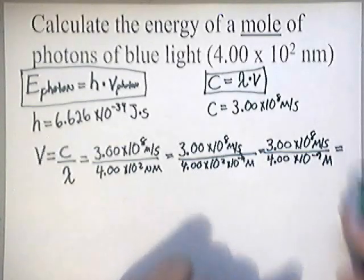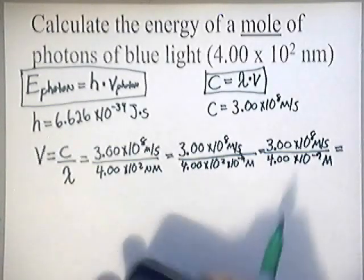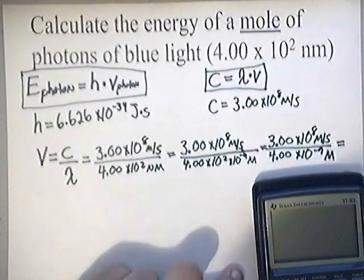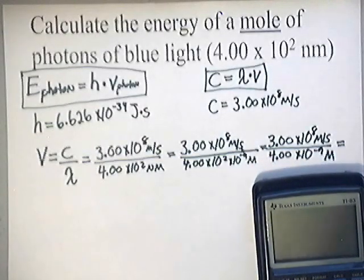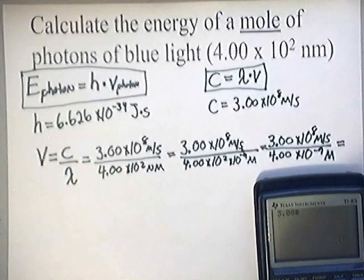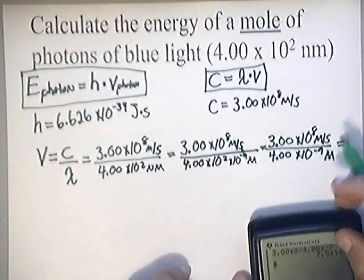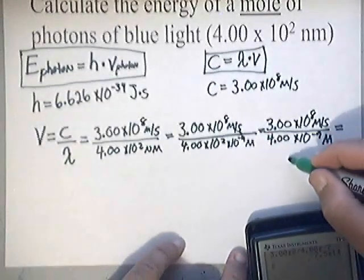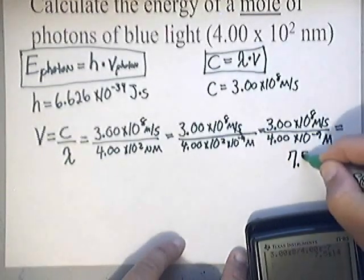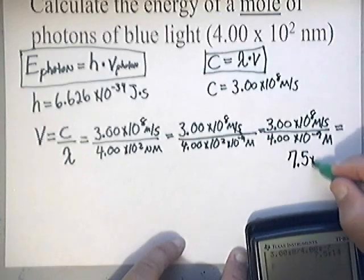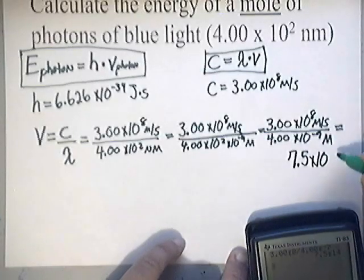You punch that into your calculator and you'll get the following: 3.00 times 10 to the eighth divided by 4.00 times 10 to the negative 7. Hit enter. You end up getting 7.5 times 10 to the 14th.